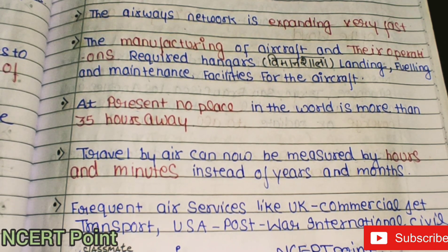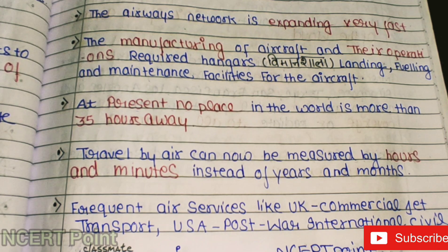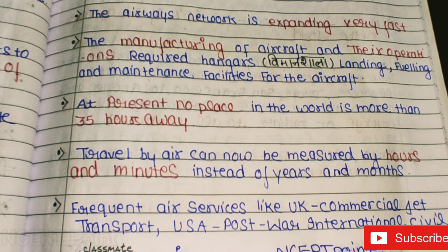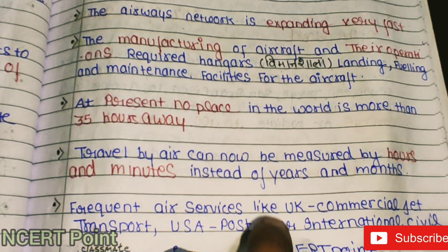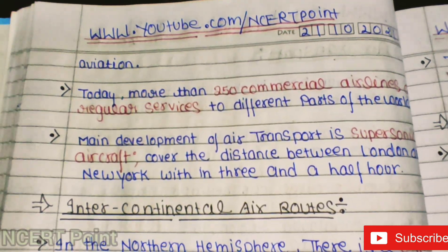At present, no place in the world is more than 35 hours away by air. Travel by air can be measured in hours and minutes instead of years and months. Frequent air services — like UK commercial jet transport and USA post-war international civil aviation — have transformed global connectivity.